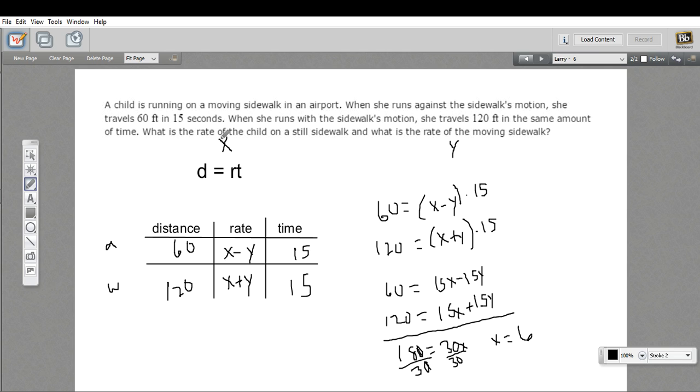What was x? That's the rate of the child on a still sidewalk. And how do we find out y here then? Well, we can plug it back into one of these equations. So if x is 6, we could put in the 6 here, or actually we could just use one of these equations here. So 15 times 6.